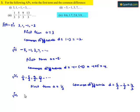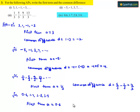Now moving on to the fourth bit, the series is 0.6, 1.7, 2.8, and 3.9. Here the first term is nothing but the first term in the series, that is 0.6. The common difference is nothing but the difference between the second and first term, that is nothing but 1.7 minus 0.6, that is 1.1.